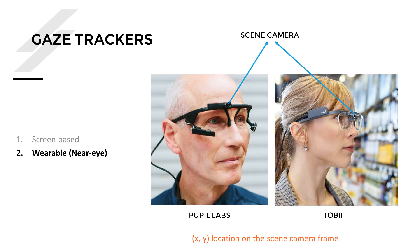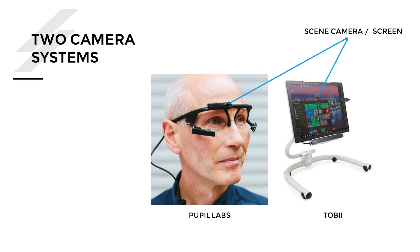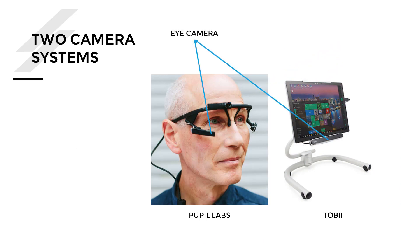The second kind of gaze tracking is called wearable or near-eye gaze tracking. Here we have a slightly more complicated setup where a person wears glasses that have a camera called the scene camera, usually located at the center of the glasses. Our objective is to find the X and Y location on the scene camera frame where the person's gaze is fixed. So in both systems, we have an image or video frame and we want to find the X and Y location of the person's gaze.